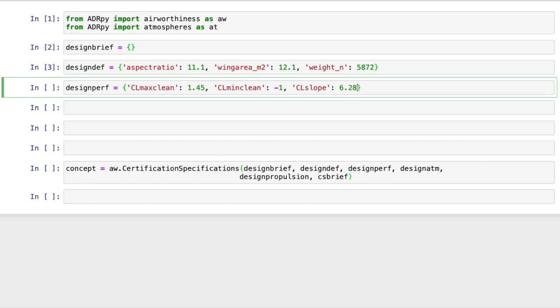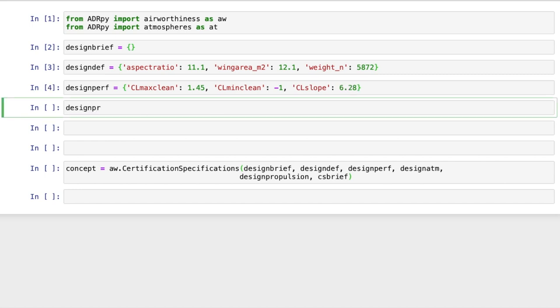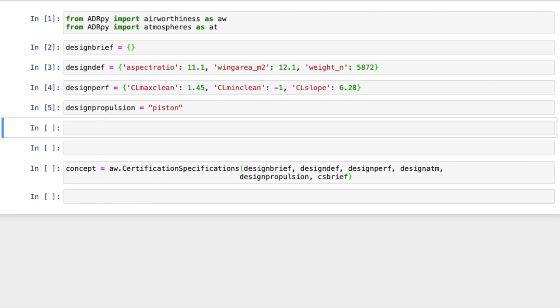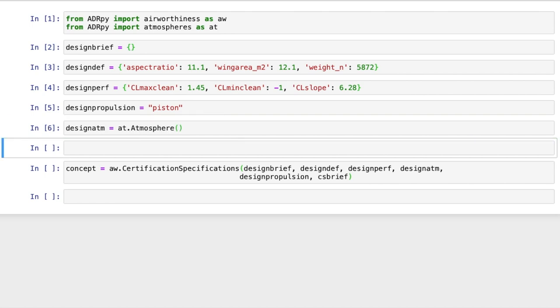We specify key aerodynamic performance figures expressing the ability of the aircraft to generate lift in the design performance dictionary. Next, we specify the type of propulsion system. This is not specifically needed for the VN diagram here; it is required simply for consistency with other classes. We set the atmosphere we want to work on by instantiating an object of the Atmosphere class. For consistency with Gudmundsson's example, let's simply have a zero offset ISA here.